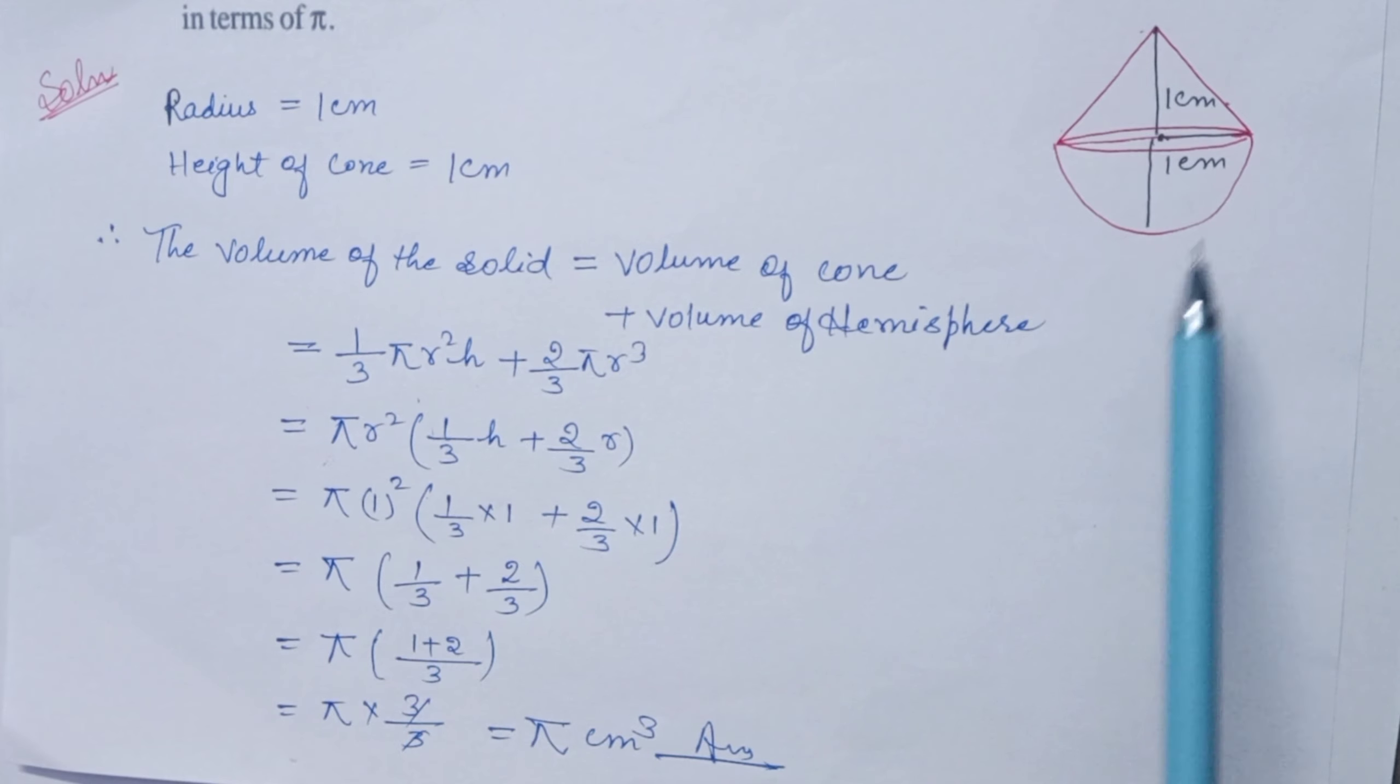Now, the radius is 1 cm. So π into radius 1, which is 1 squared, times 1/3 into height 1 plus 2/3 into radius 1 cm.